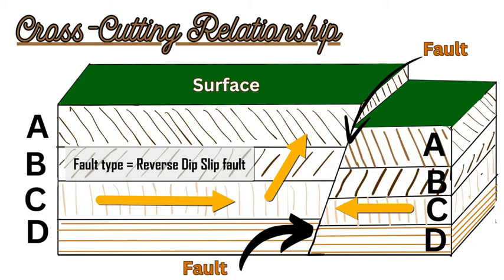We can see that all of the rocks A, B, C, and D were all present and all laid down before this fault line occurred, because all four layers are present and the fault line is going through all of these layers.